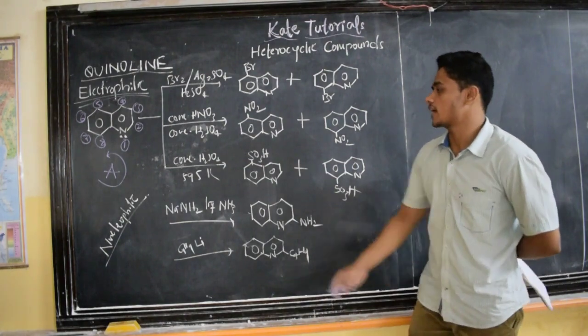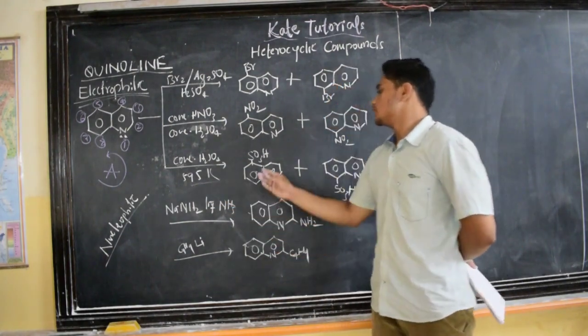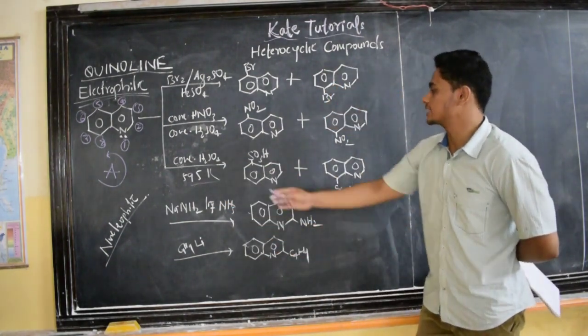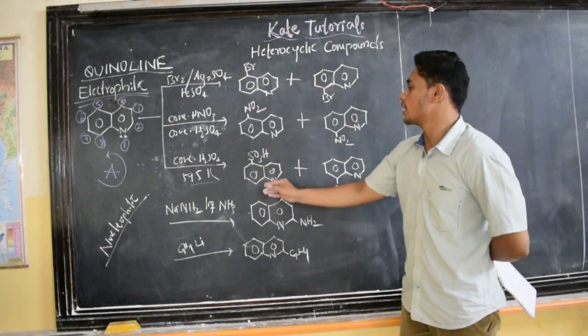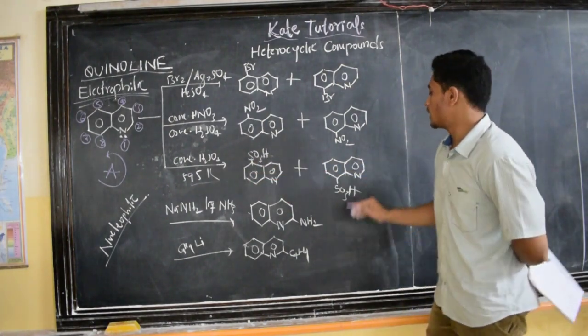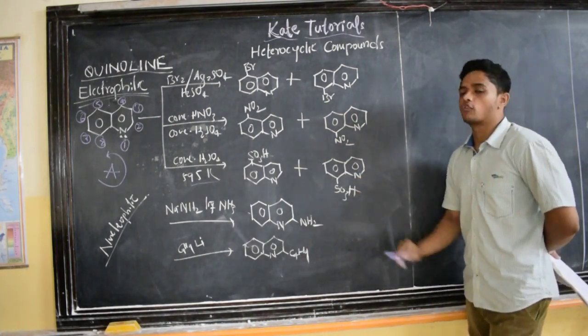Here is sulfonation. At 585 Kelvin, the sulfonic acid group attacks at 5th or at 8th position, giving quinoline-5-sulfonic acid and quinoline-8-sulfonic acid.